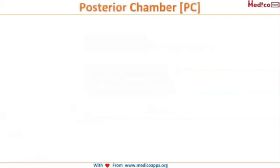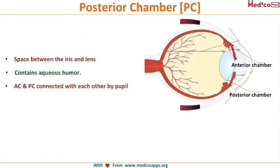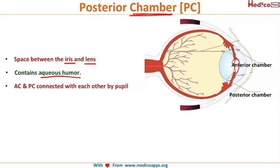Now let's look at the posterior chamber. The posterior chamber is the space between the posterior surface of the iris and the anterior surface of the lens — it is a very small chamber, distinct from the posterior segment. It also contains aqueous humor. The anterior and posterior chambers are connected to each other only via the pupil.